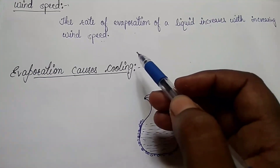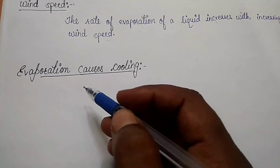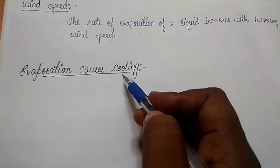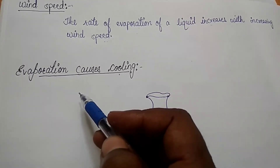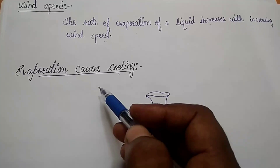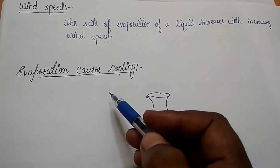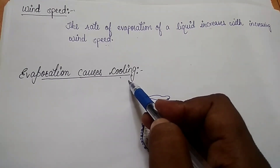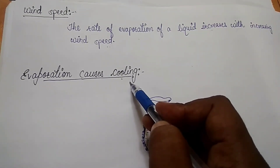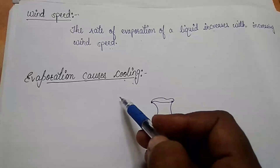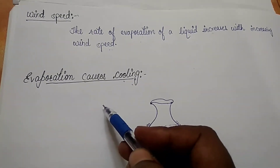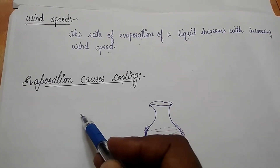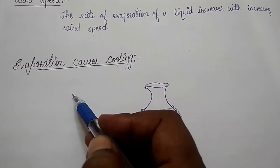Now let us see how evaporation causes cooling. We have already studied that whenever a liquid evaporates, it must be supplied the latent heat of vaporization. So the cooling caused by evaporation is based on the fact that when a liquid evaporates, it takes the latent heat of vaporization from anything it touches, and by losing heat, that anything gets cold. Let us take an example.